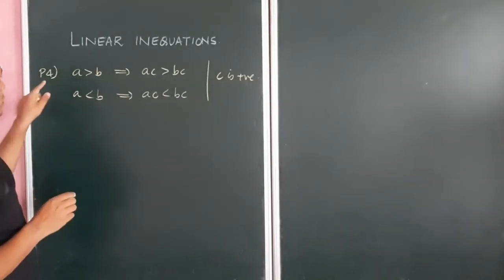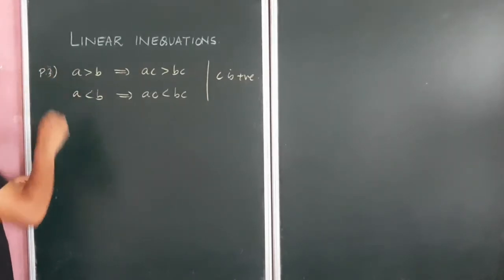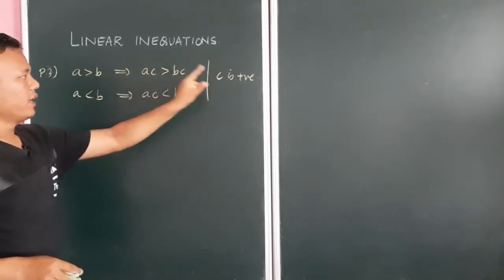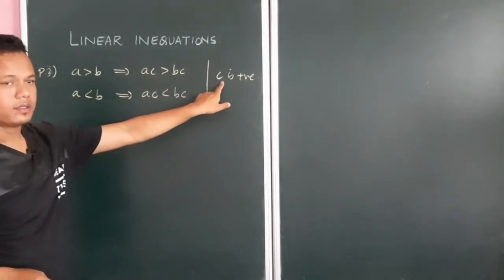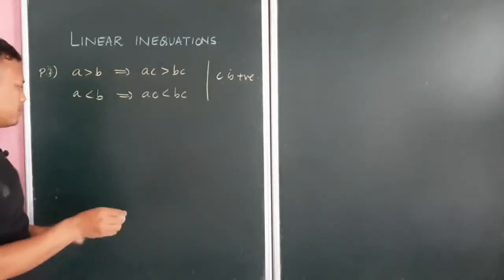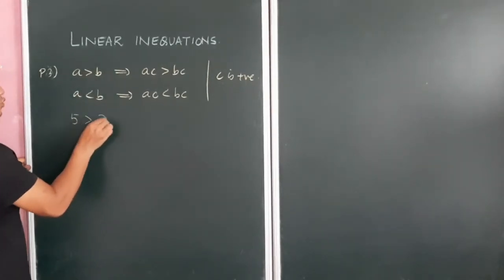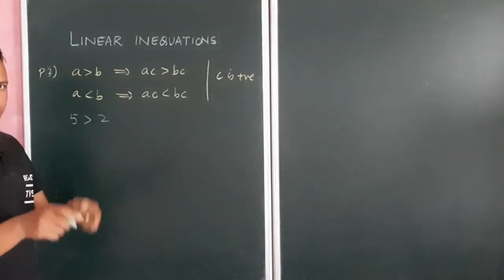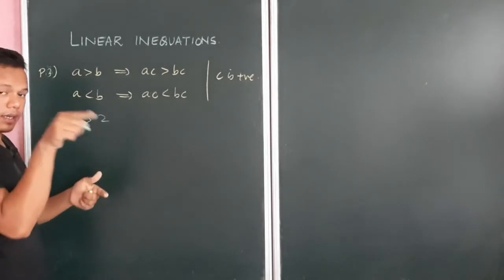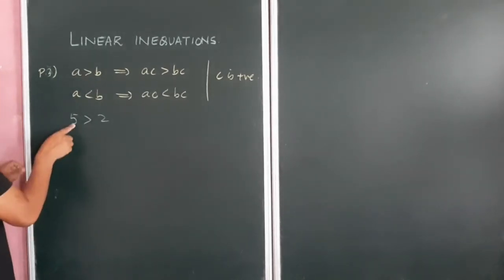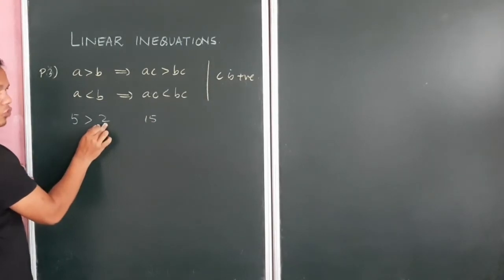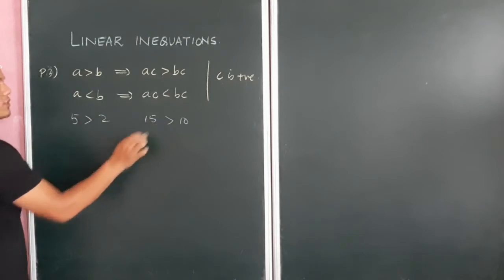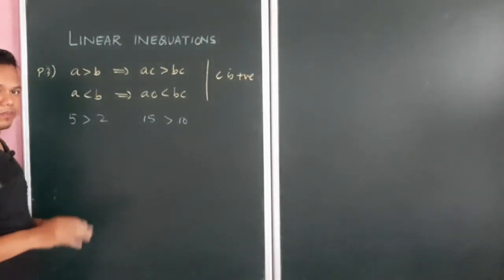Property 3: if you multiply both sides by a positive number c, the sign still remains the same. For example, 5 > 2 — multiply both sides by positive number 3: 3 × 5 = 15 and 3 × 2 = 10, and 15 > 10. The sign remains the same. So multiplying both sides by a positive number does not change the inequality sign.